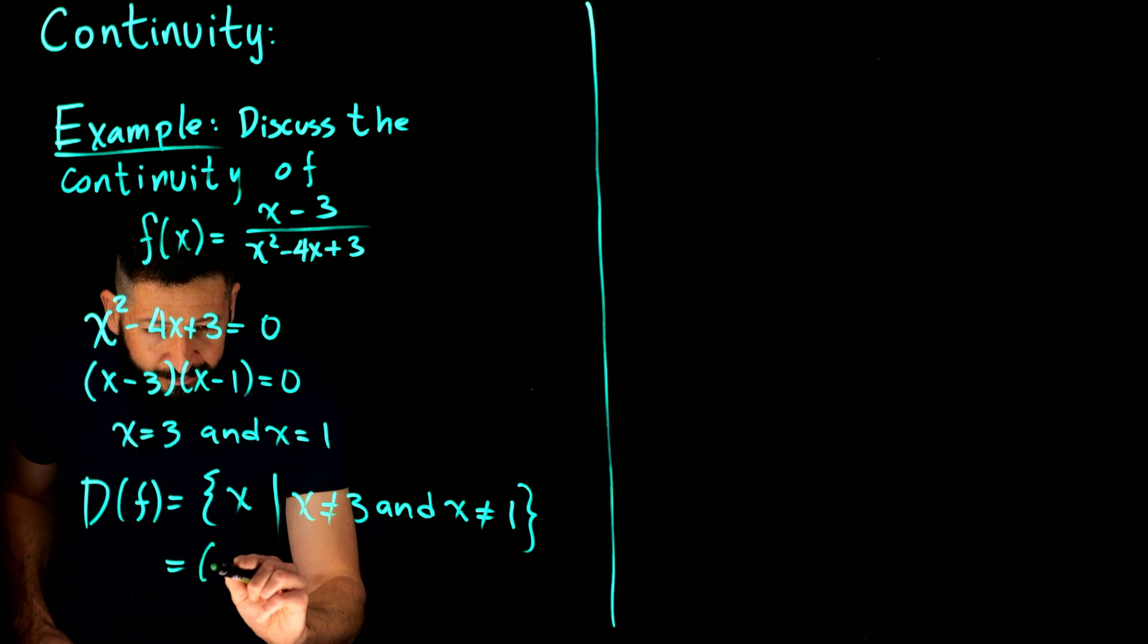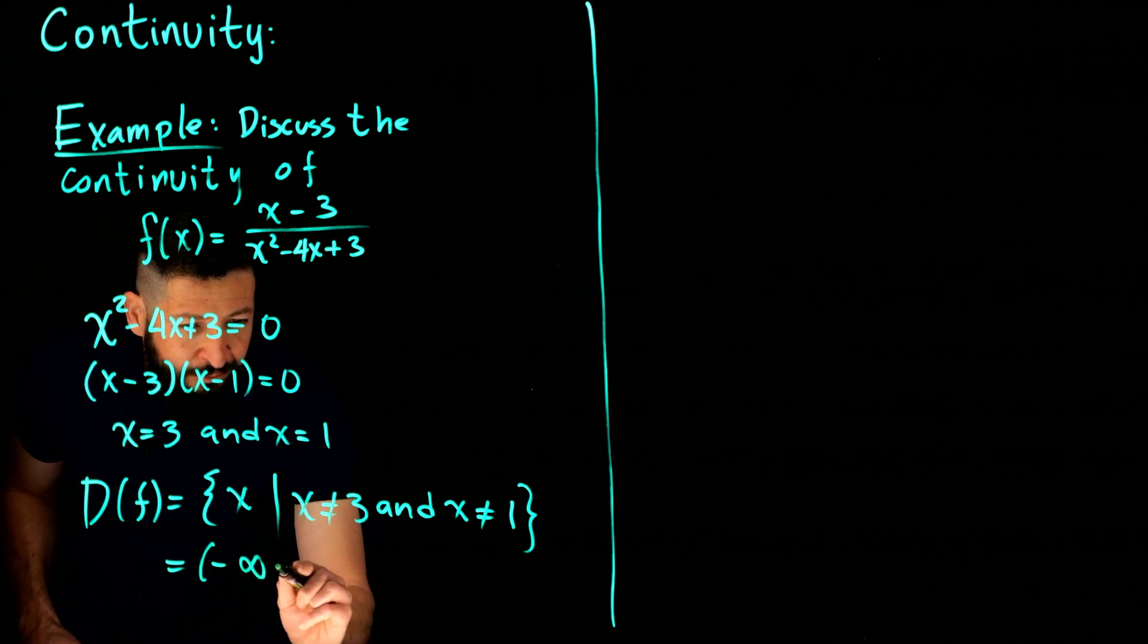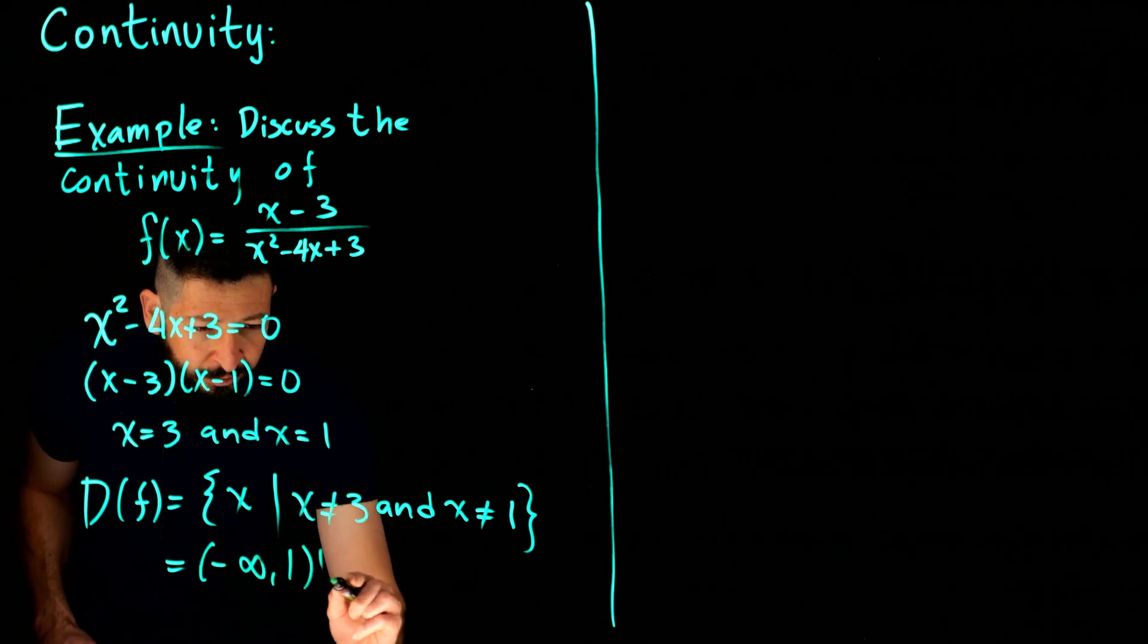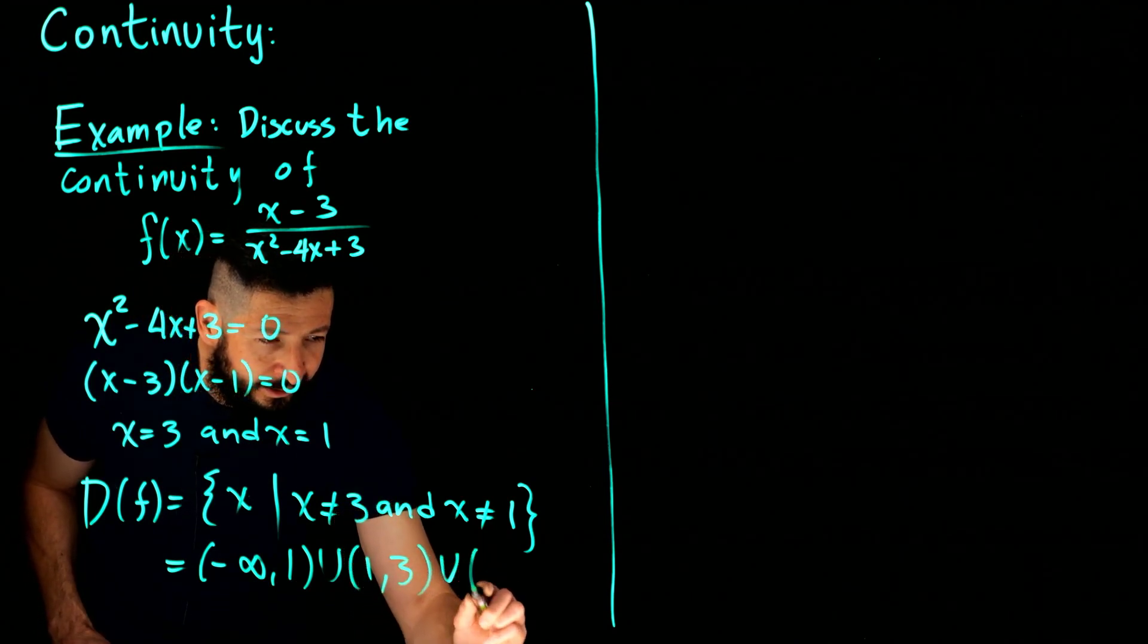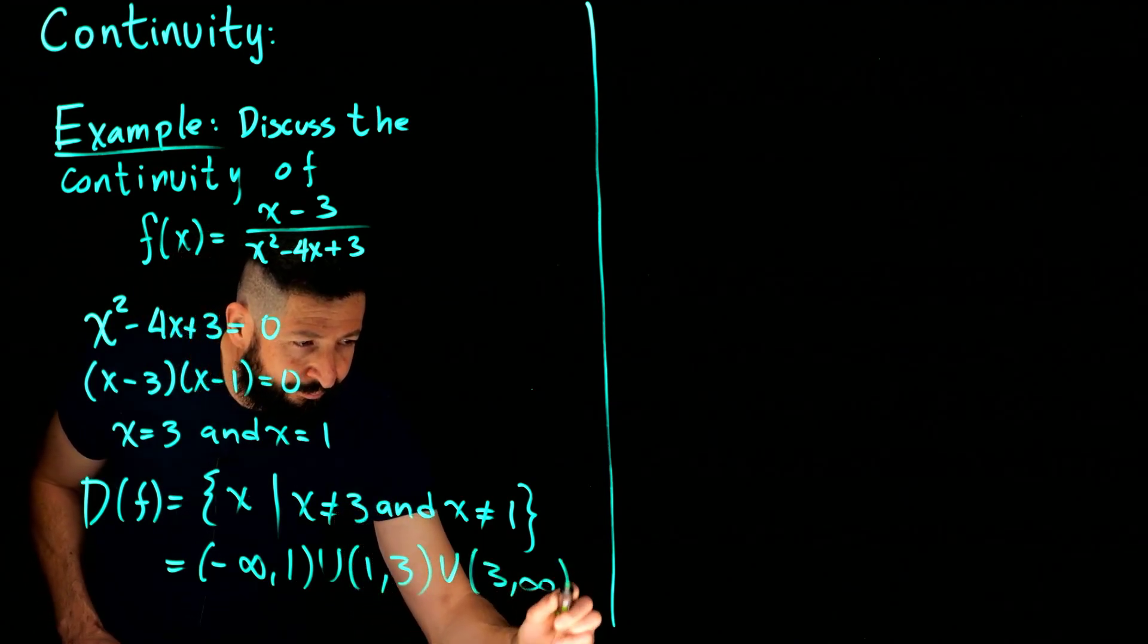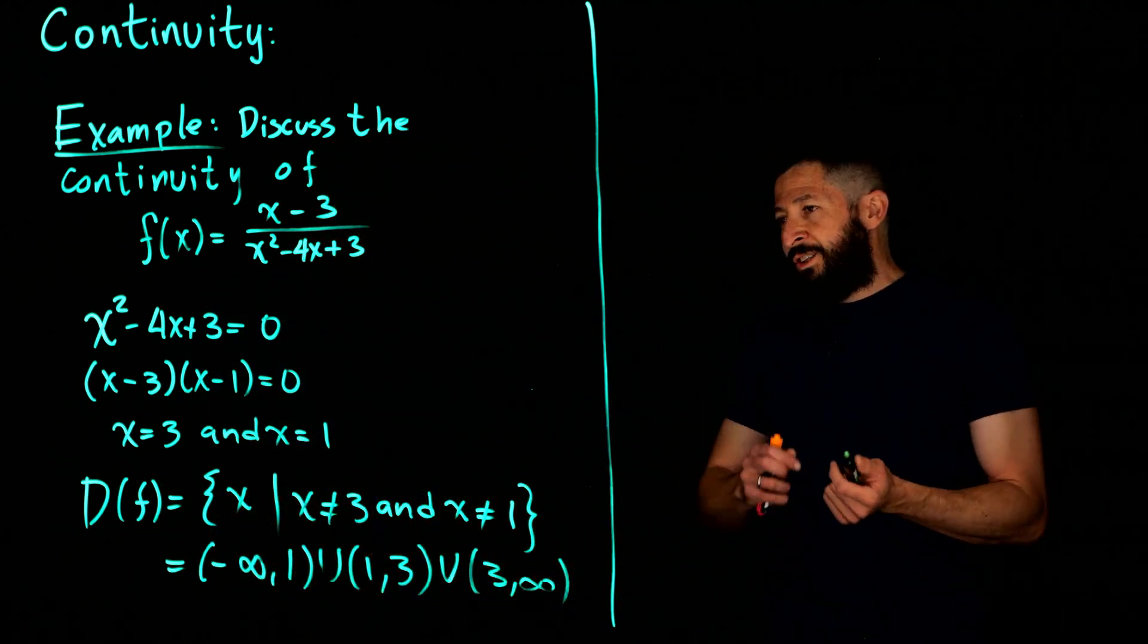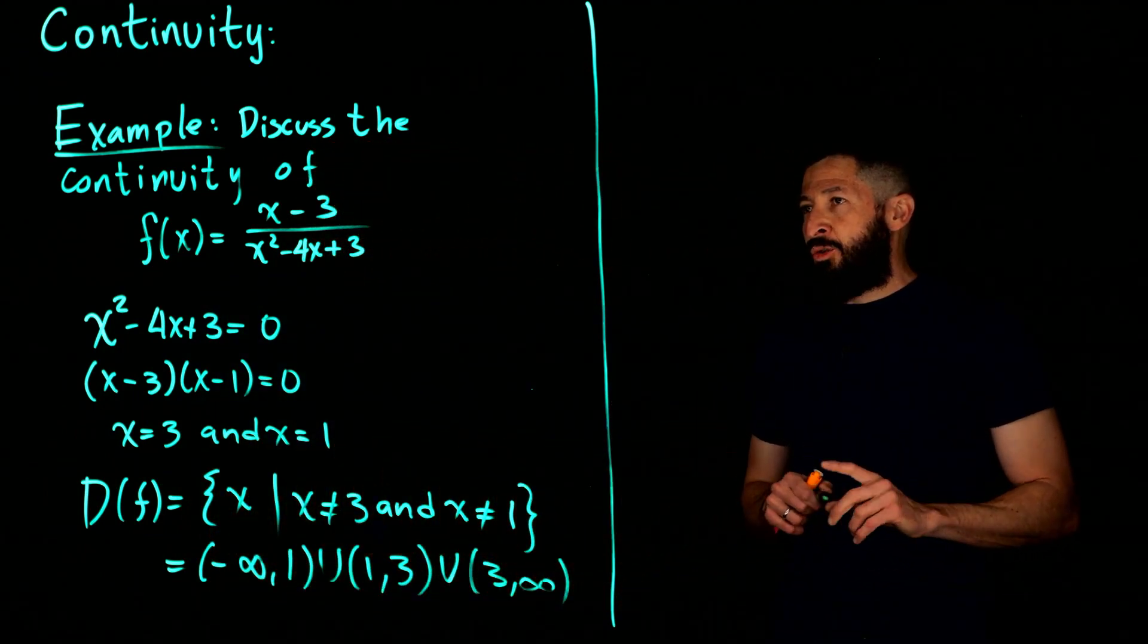Which in interval form, by the way, is written as negative infinity to 1, union 1 to 3, union 3 to infinity. So 3 and 1 could cause trouble.